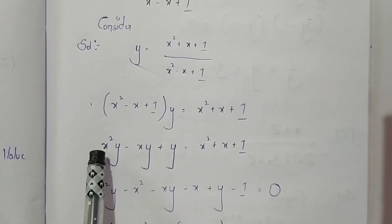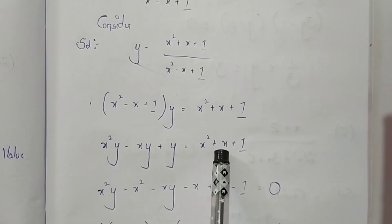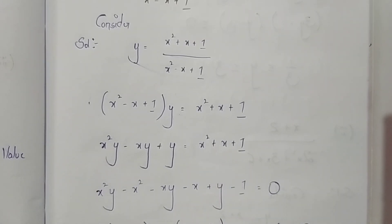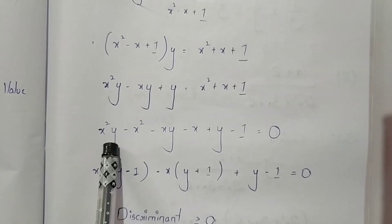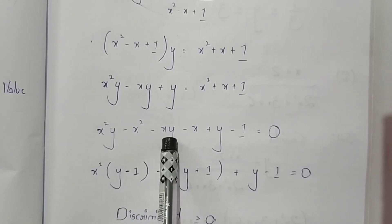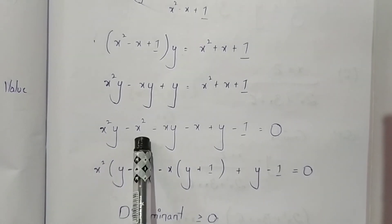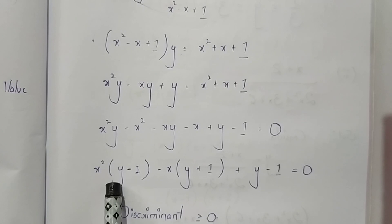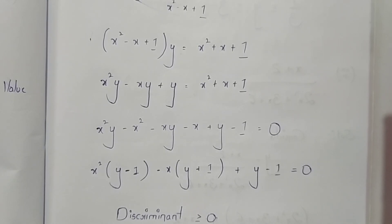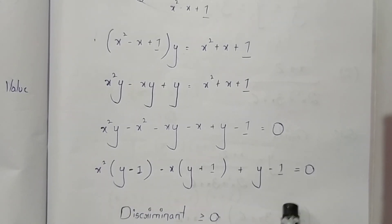On multiplying, we get x²y - xy + y = x² + x + 1. Now bring all terms to one side: x²y - x² - xy - x + y - 1 = 0. Taking x² as common from the first two terms gives (y - 1), and taking -x as common from the next two terms gives (y + 1), leaving (y - 1) as the constant term.